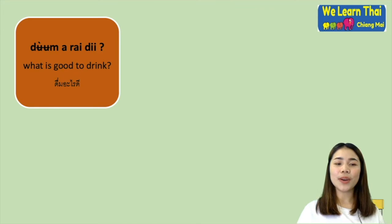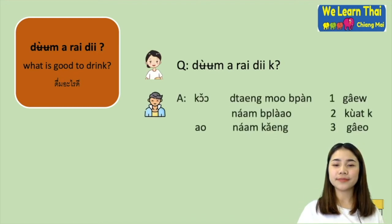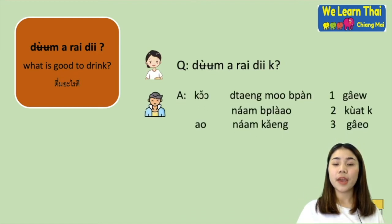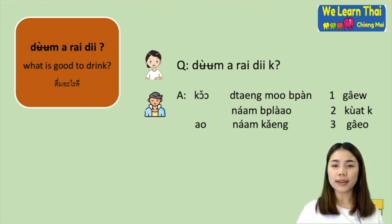ดื่มอะไรดี — what is good to drink? ดื่มอะไรดีค่ะ. ขอแตงโมปั่นหนึ่งแก้วครับ — may I have one watermelon shake. Or you can say: เอาน้ำเปล่าสองขวดครับ — I will take two bottles of water.